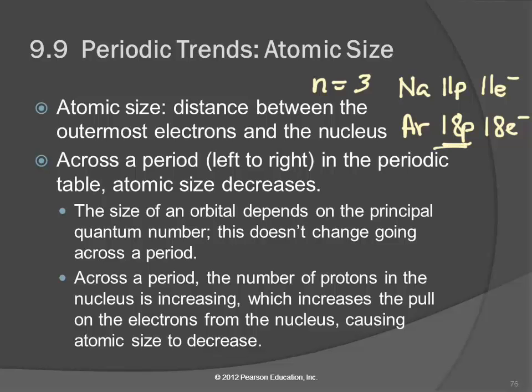But argon has 18 protons pulling on the electrons. We've got this attraction between the positive nucleus and the negative electrons. Sodium has 11 protons and 11 electrons, so we have more pull on those electrons in the argon than we do in the sodium. You have things that are roughly the same distance, but now the charges are greater. There's going to be more attraction.